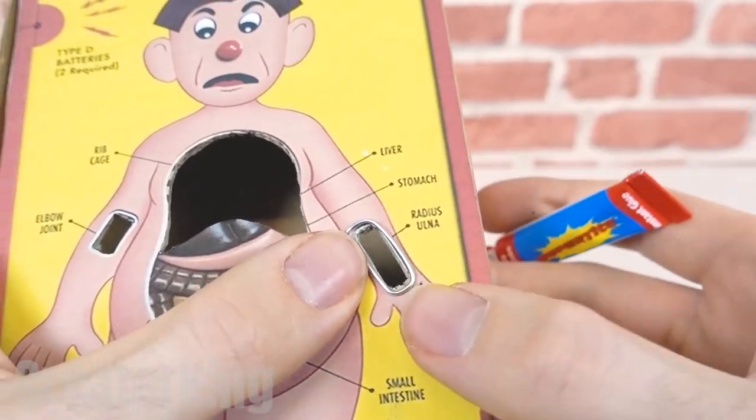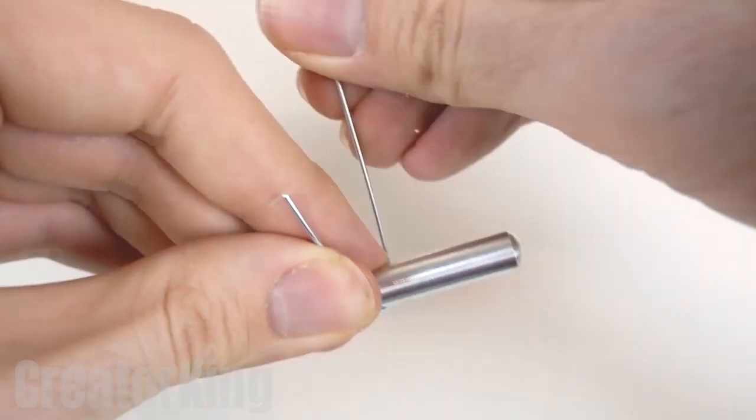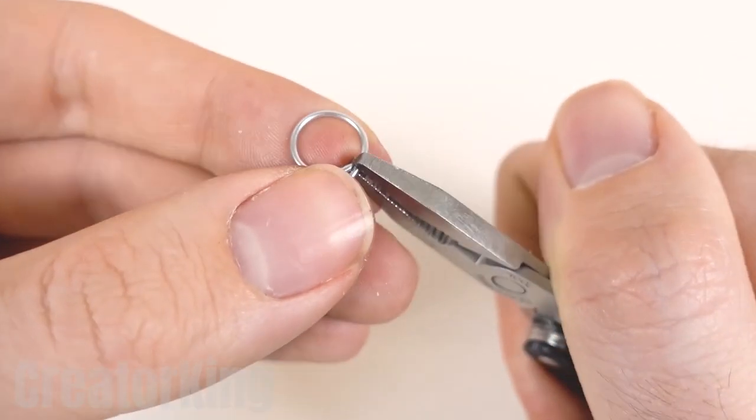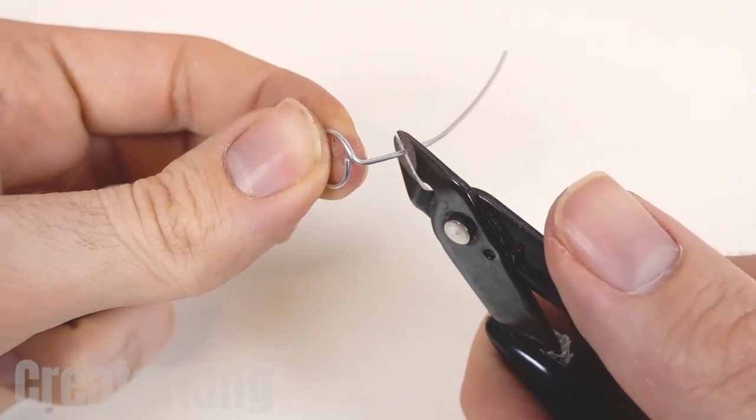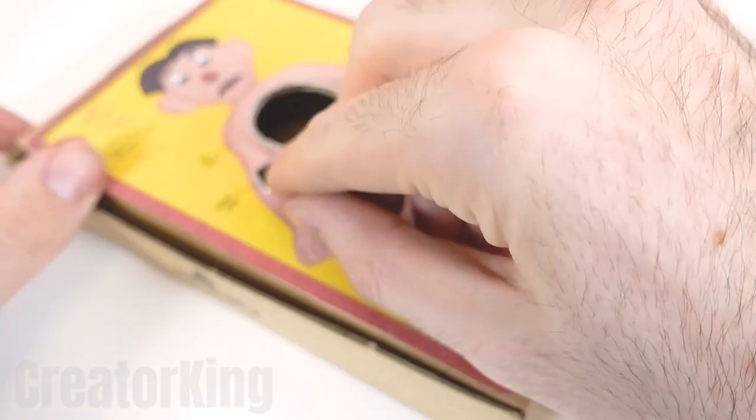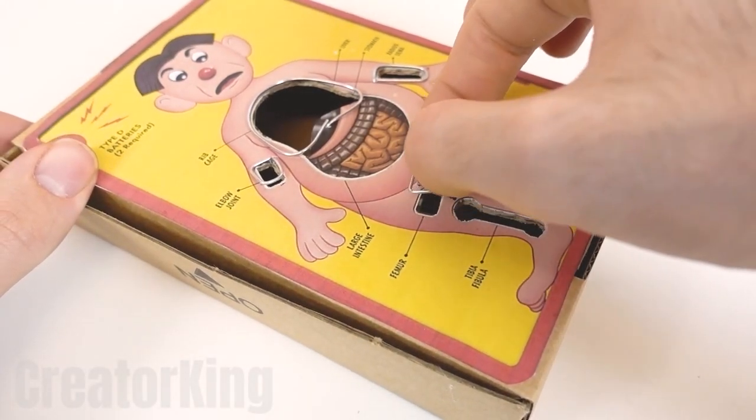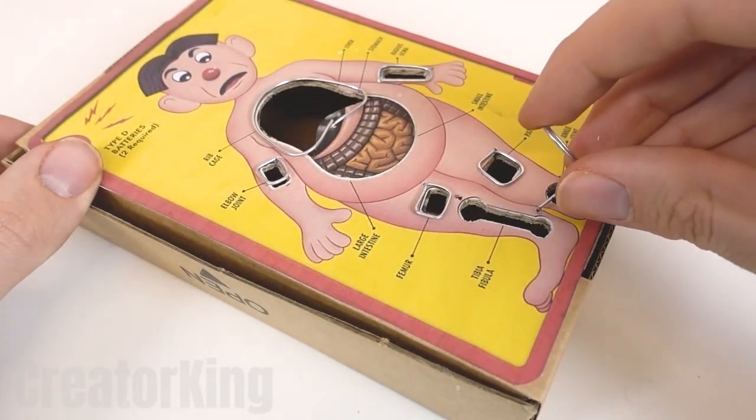While I continue gluing these pieces of metal, tell me what Santa brought you for Christmas. I got a nice watch, lots and lots of socks, since the ones I had were full of holes, boots to make me look cool, and tools to create inventions. Even though I wanted a Nintendo Switch, but well, thanks to the big belly for the gifts.